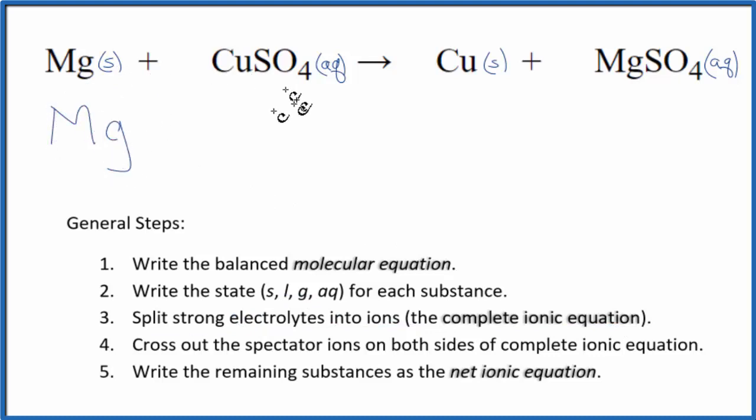We'll write Mg. I'll write the states at the end. Copper, we don't know the charge on copper. It's a transition metal, but we do know the sulfate, SO4. This whole ion is always 2 minus, so the copper has to be 2 plus. That's why we called it copper 2 sulfate. So, we have our copper 2 ion, plus we have the sulfate ion, SO4 2 minus.